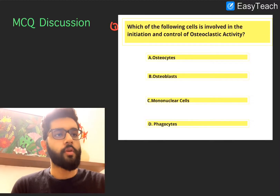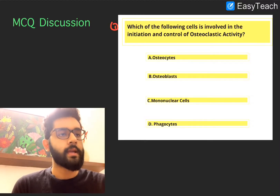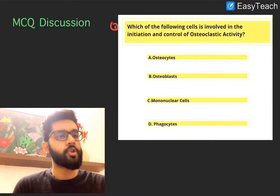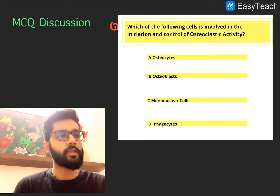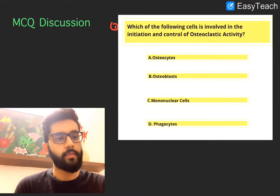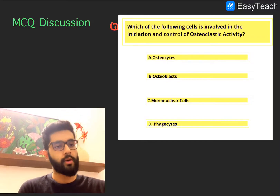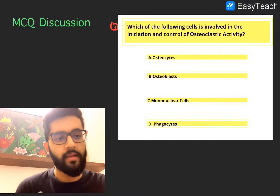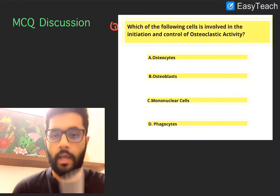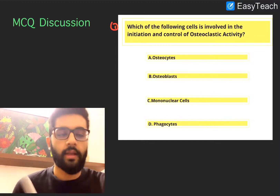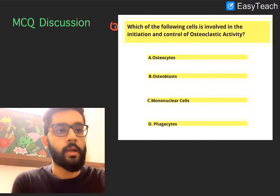First question: which of the following cells is involved in the initiation and control of osteoclastic activity? A. Osteocytes, B. Osteoblasts, C. Mononuclear cells, or D. Phagocytes. Pause, think and then we'll discuss.